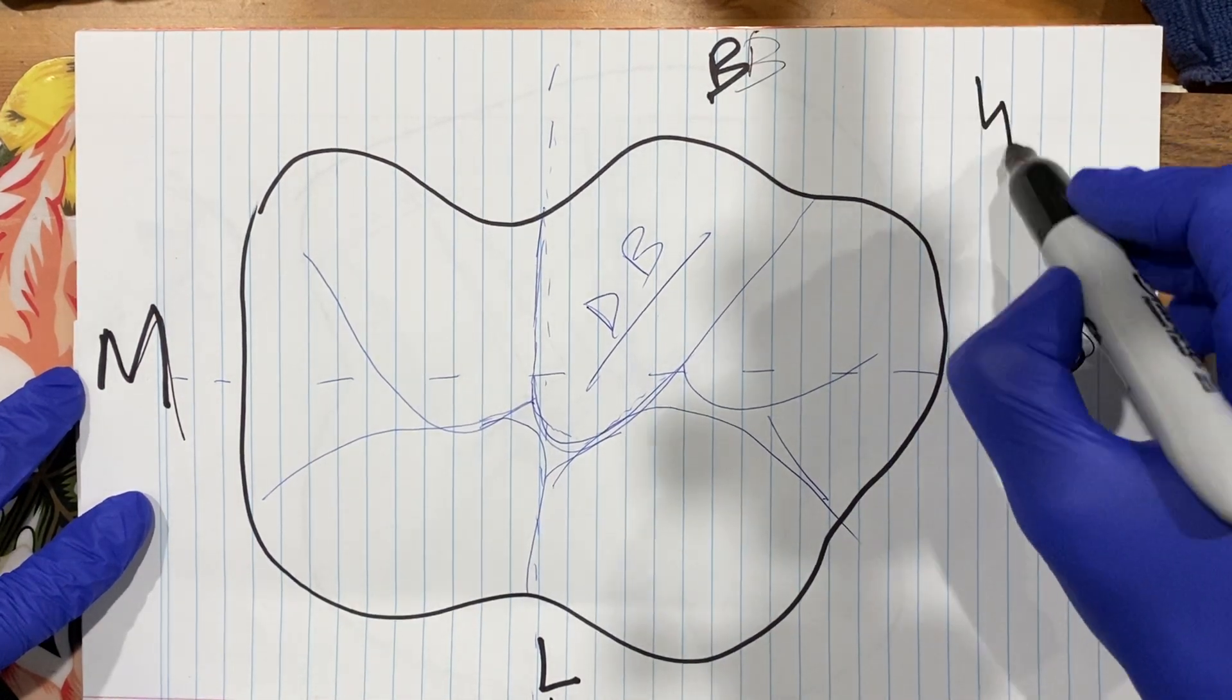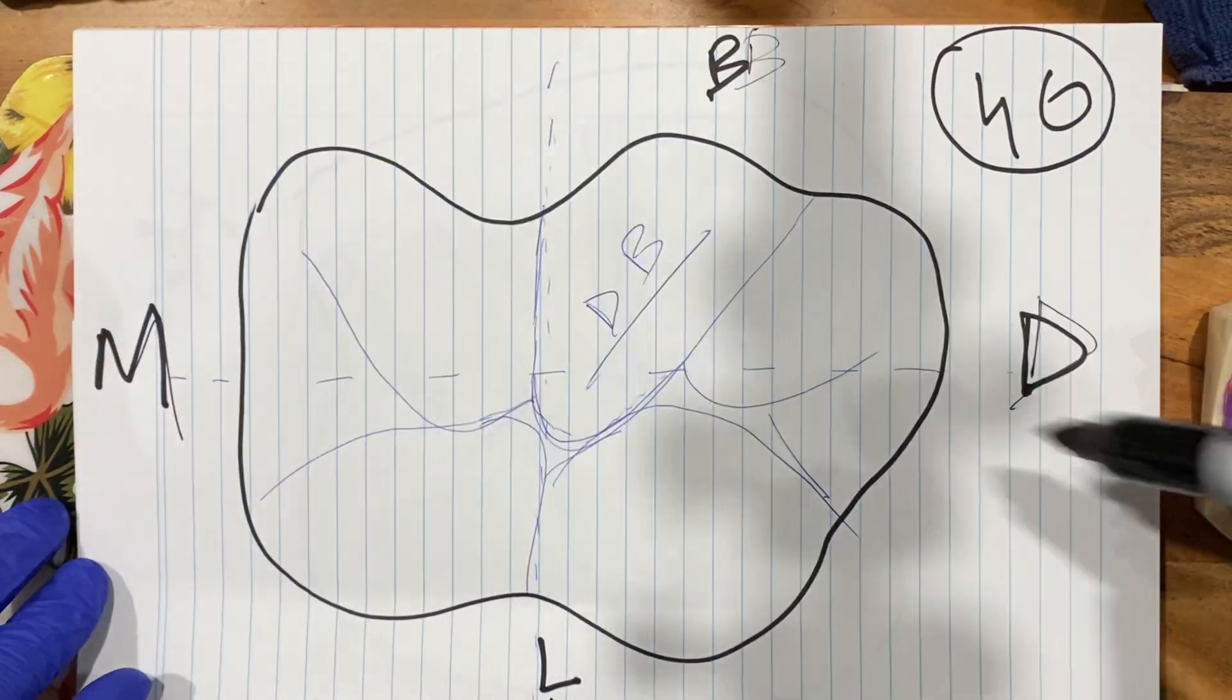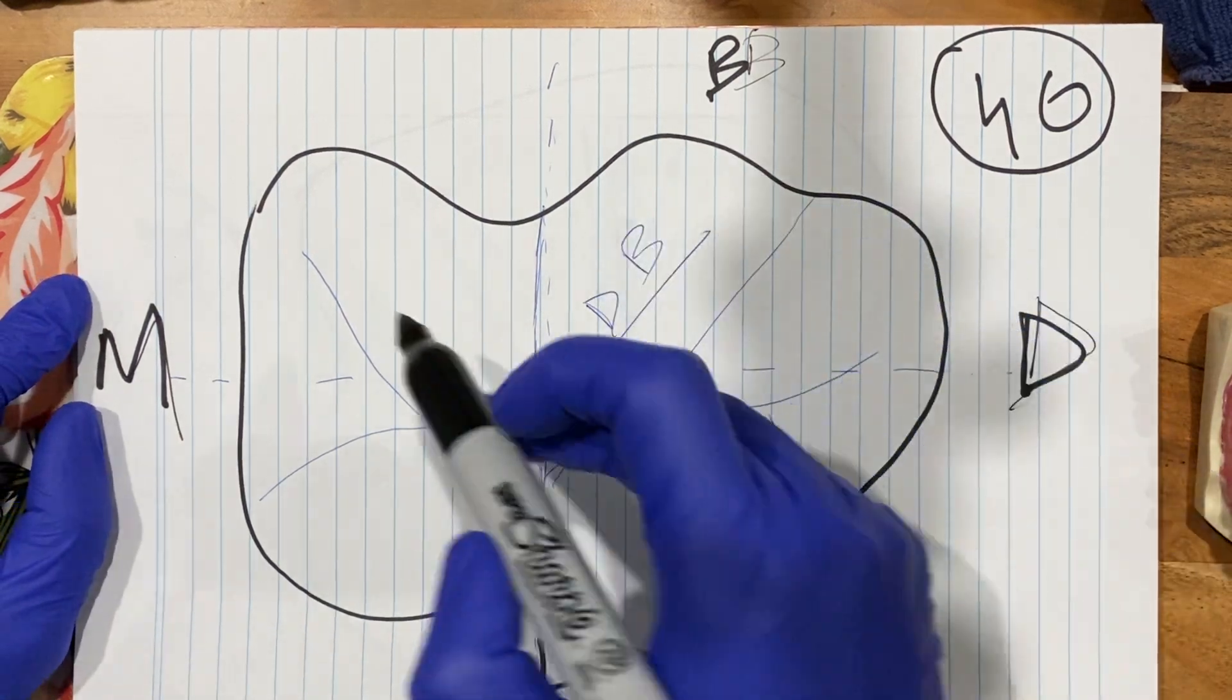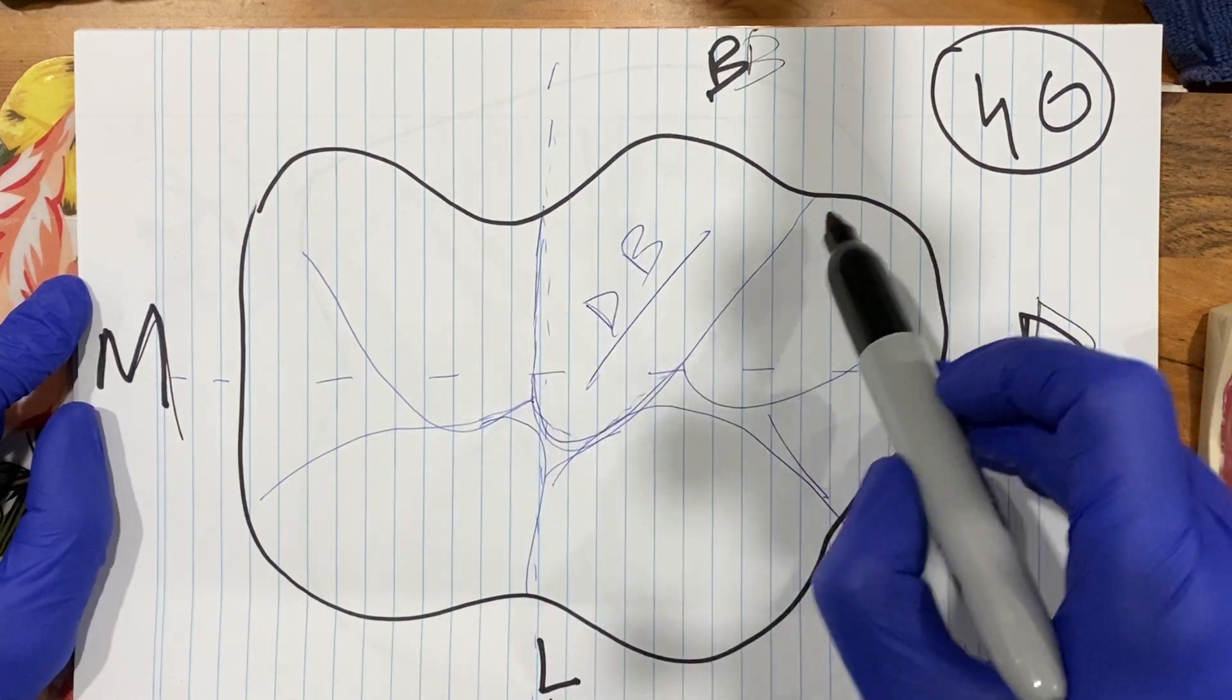Just imagine this is a four-six, the line passing. Now, distal buccal—because in buccal we have three cusps, right? Mesial buccal, distal buccal, and then distal.